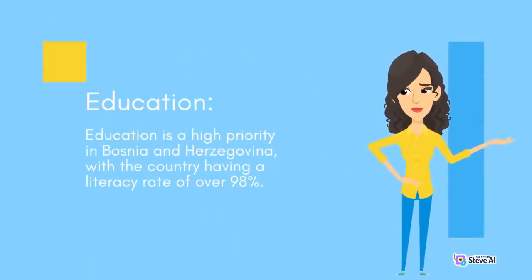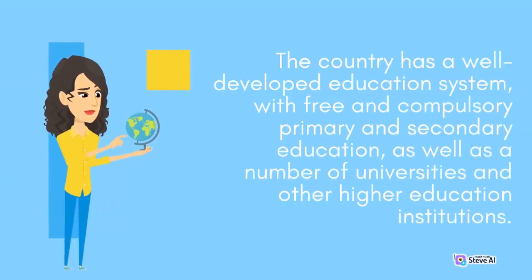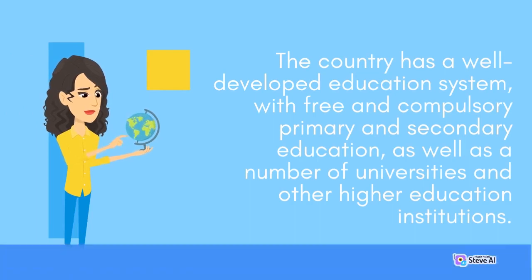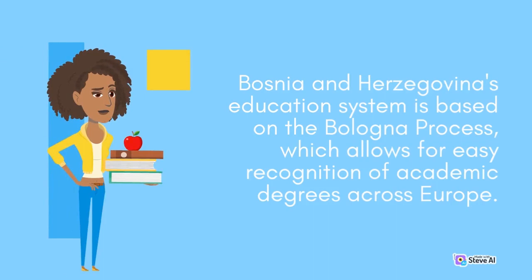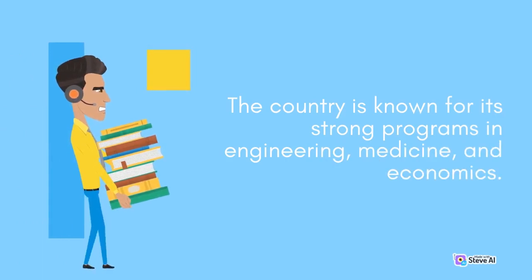Education is a high priority in Bosnia and Herzegovina, with the country having a literacy rate of over 98%. The country has a well-developed education system, with free and compulsory primary and secondary education, as well as a number of universities and other higher education institutions. Bosnia and Herzegovina's education system is based on the Bologna process, which allows for easy recognition of academic degrees across Europe. The country is known for its strong programs in engineering, medicine, and economics.